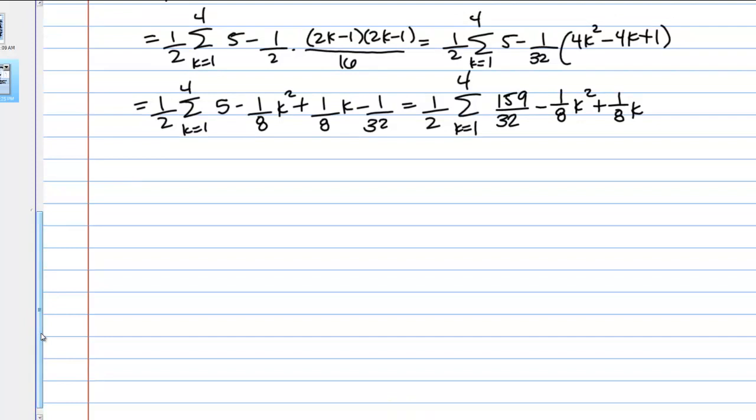Now, I know what each of these pieces, I know how to use a sum formula on each of these pieces. I've got a constant, I've got a k squared term, and I've got a k term. To make it a little bit more straightforward, we could break this up. This one half is in front of everything, but I can break the sum up term by term. The sum of 159 over 32, I can pull constant multiples out front too. 1/8 times the sum of k squared plus 1/8 times the sum of k. Now, I could definitely use my sum formulas on that. That's the perfect form to use the sum formulas on.